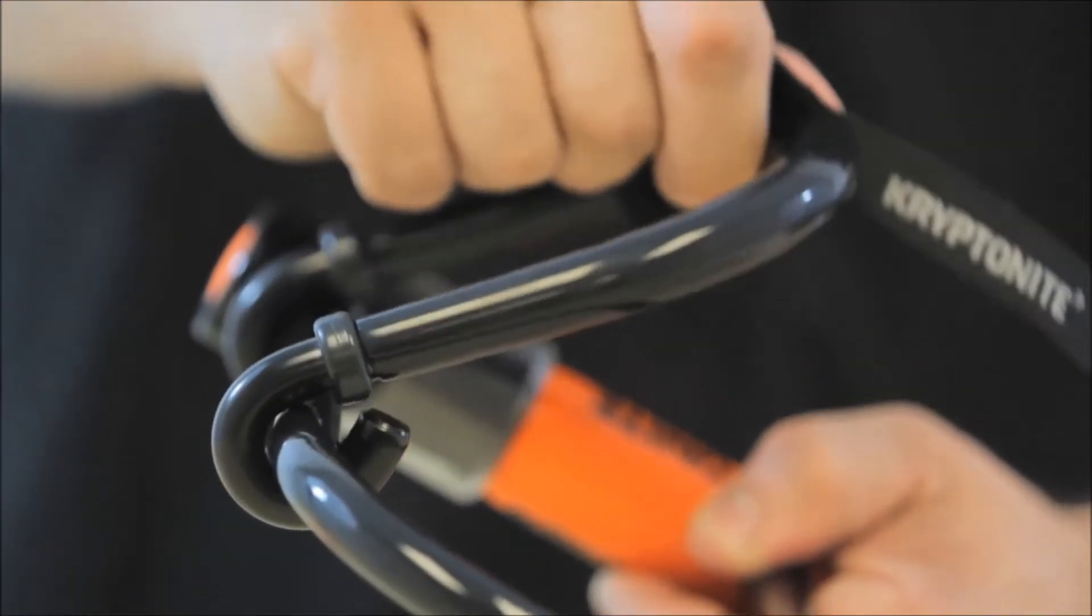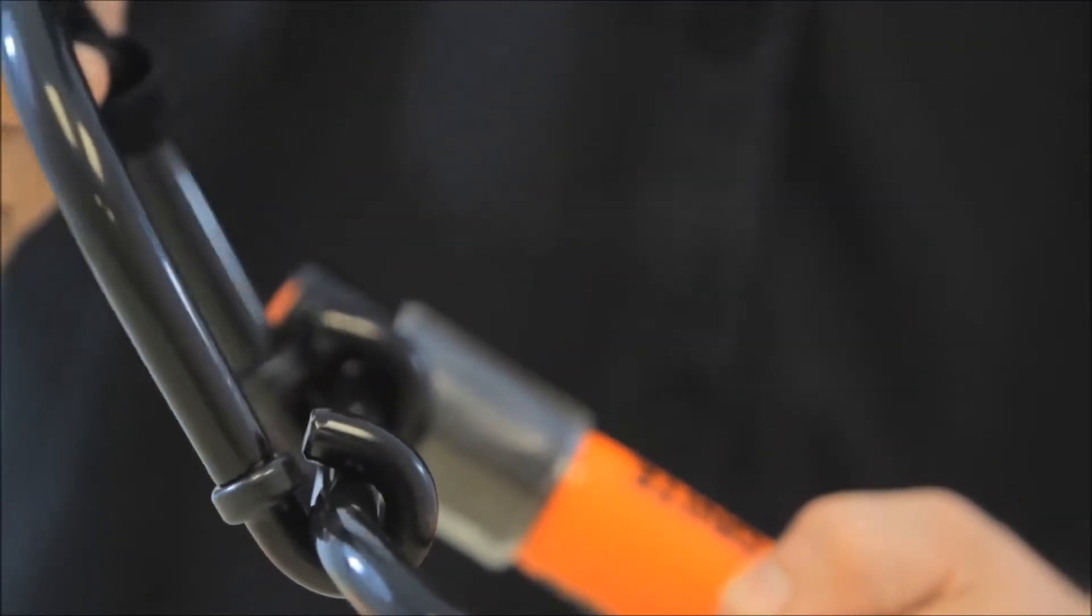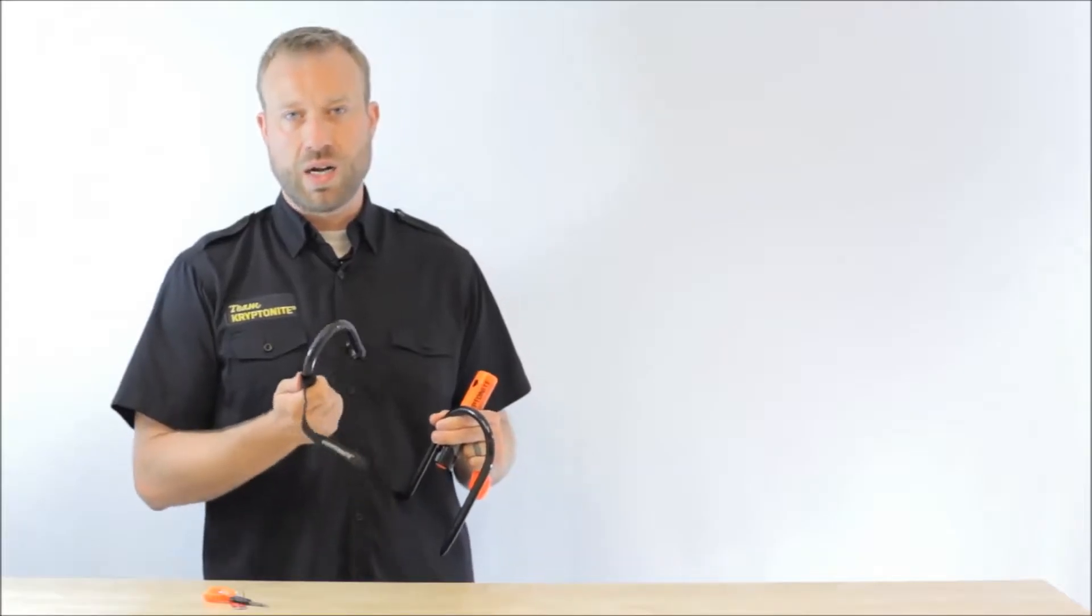The real differentiator with this lock is the wheel extender, which attaches to the main shackle. So we'll show you how this works with a real lockup.